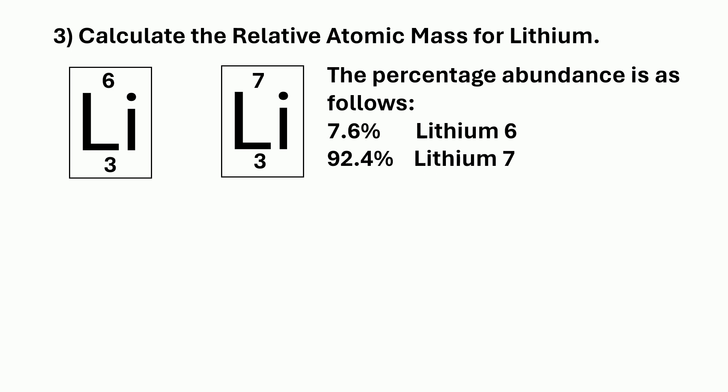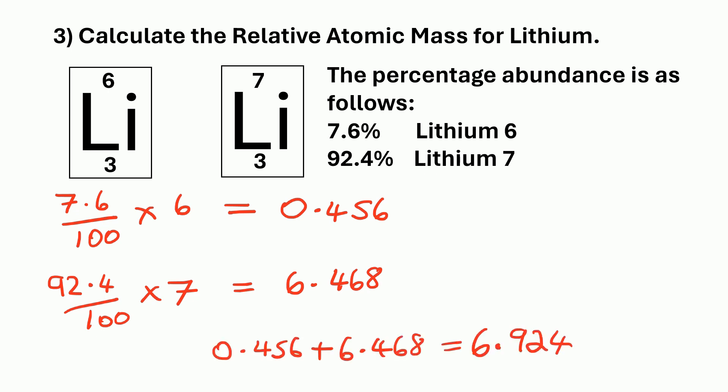So this is how we work it out. We do 7.6%, so that's 7.6 divided by 100 times the mass number, which is 6. And that comes to 0.456. And then we do 92.4%. So that's 92.4 divided by 100 times the mass number, which is 7. And that's 6.468. We then need to add those two numbers together. And that comes to 6.924.